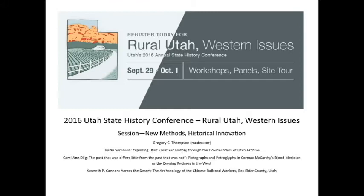Through the Downwinders of Utah archive, viewers are able to examine the contained information and utilize it within educational and research endeavors. The searchable timeline allows for easy access to time-specific data, visualizations, and information on demand. Each component presents detailed information regarding each event, presenting information on the name, date, time, device type, yield, atmospheric release of iodine-131—a nuclear byproduct produced during the detonation process—and much more.